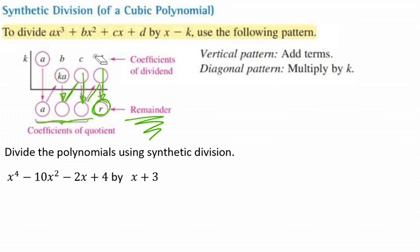So let's do an example, because I promise it's going to make so much more sense, and you're going to just love it. So the first thing that we're going to do is we're going to take a look at our problem. It says x⁴ - 10x² - 2x + 4, and we're dividing them by x + 3.